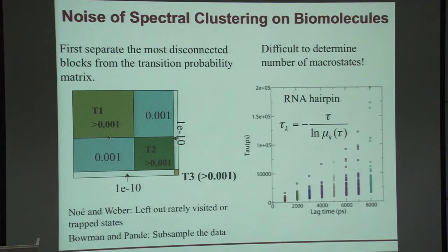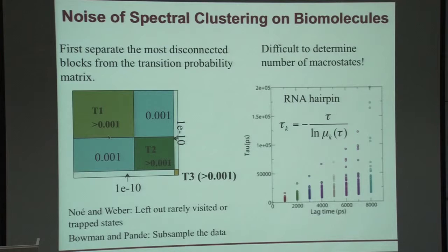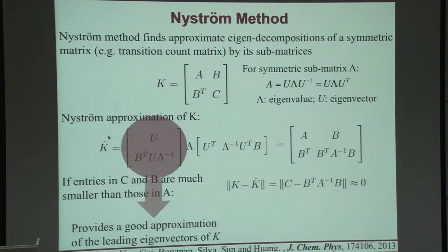Applying this to real systems has a lot of issues. In real systems, we have a large number of MD simulations which produce a lot of noise. In many cases, we see a very tiny state in our transition probability matrix that looks almost disconnected from the rest of the phase space. If you just use this straightforward spectral clustering, that disconnected state will be picked up first, but it may not correspond to real metastable states. This becomes a very big issue when people apply MSM Builder to real systems. The second issue is how to determine the number of states we have — this depends on the resolution of the model, and it's a difficult problem.